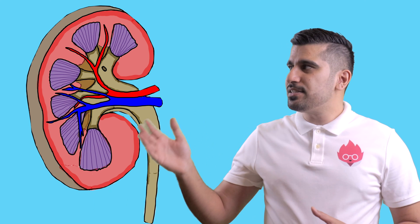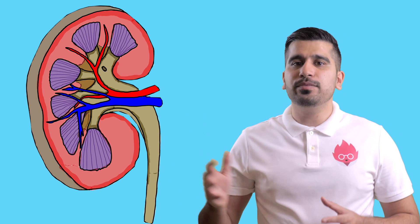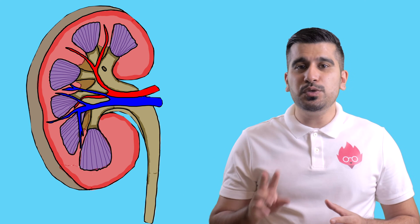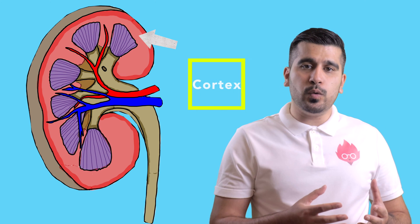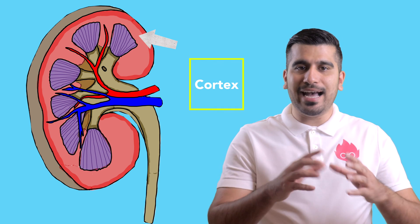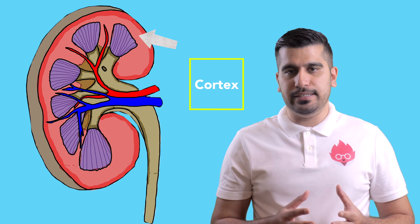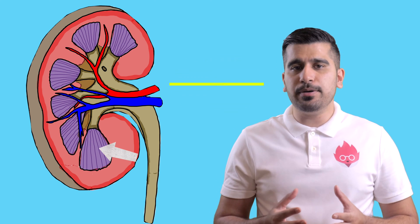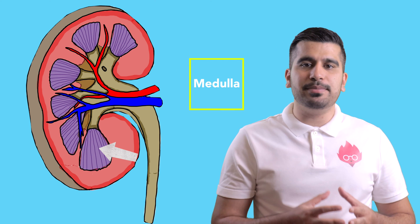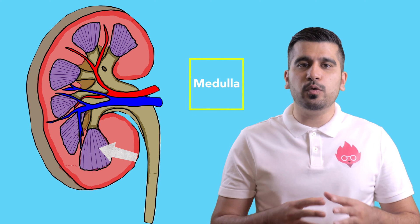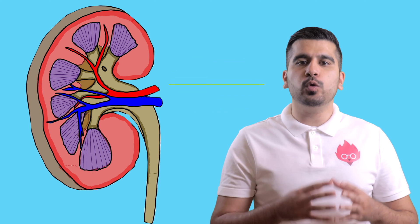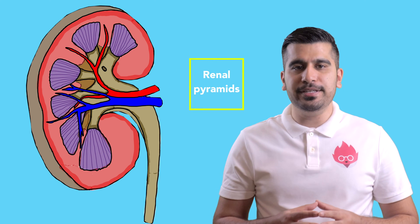If you look at this diagram here, we can see the kidney's internal structure. There are two essential areas of the kidney: the renal cortex, which is the outer part of the kidney, and the inner part, which is the medulla, which consists of multiple tissue masses called the renal pyramids.